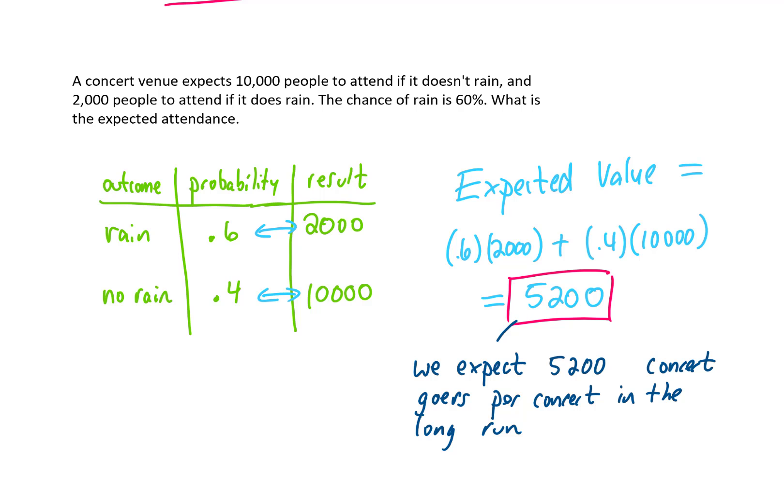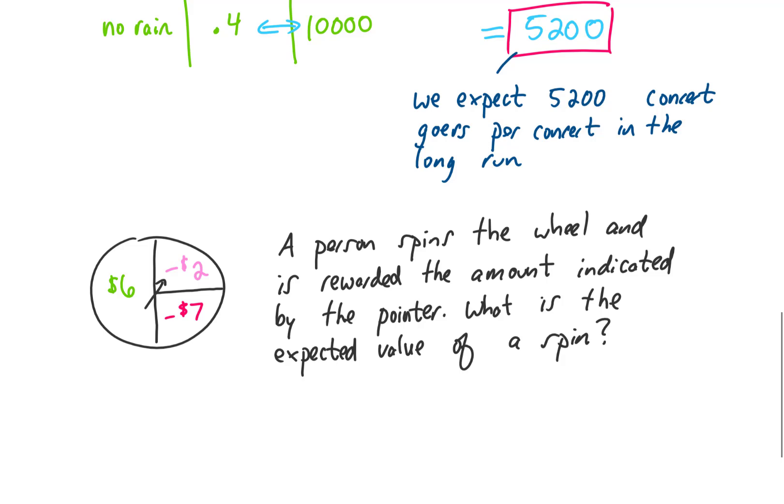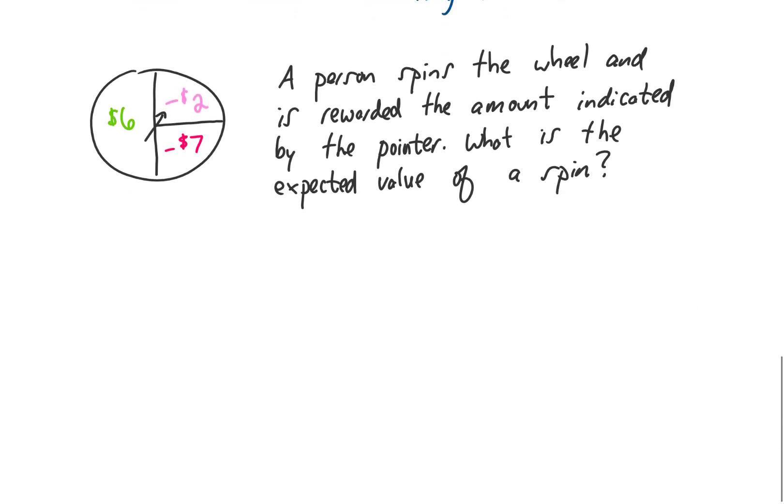But on average, given that there's a 60% chance of rain, we should expect 5,200 concertgoers in the long run. Okay, let's do one more example. We have a spinner and a person spins the wheel and is rewarded the amount indicated by the pointer. What is the expected value of a spin?